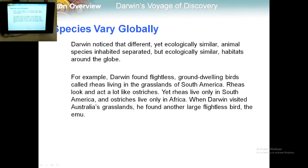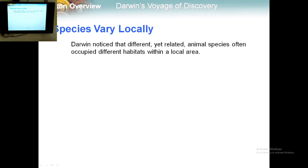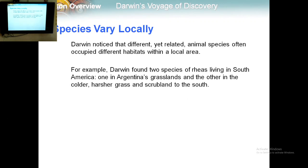The second pattern is species vary locally. Darwin noticed that different yet related animal species often occupy different habitats within a local area. As an example, Darwin found two species of rheas living in South America — one in Argentina's grasslands and the other in the colder, harsher grasslands to the south.